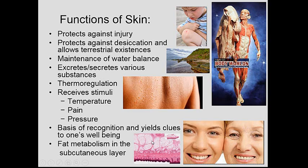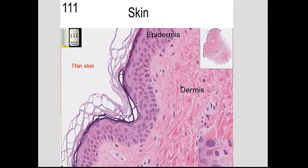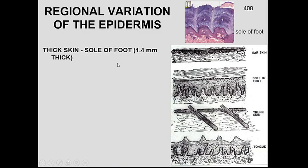Fat metabolism occurs in the subcutaneous or hypodermic layer — that fat is an energy source for metabolism. Skin has a binary origin: there are three embryonic origins — ectoderm, mesoderm, and endoderm — and two of those give rise to skin. The ectoderm gives us the epidermis, and the dermis comes from the mesoderm. The dermis has fibroblasts and collagen, while the epidermis is stratified squamous epithelium with keratin on the surface.